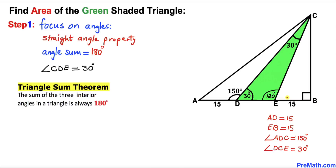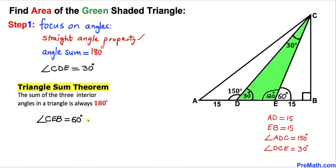In the next step, let's focus on the green triangle and apply the straight angle property again. The sum of the angles on a straight line is 180 degrees. Since the interior angle at E in the triangle is 120 degrees, the angle CEB turns out to be 60 degrees.